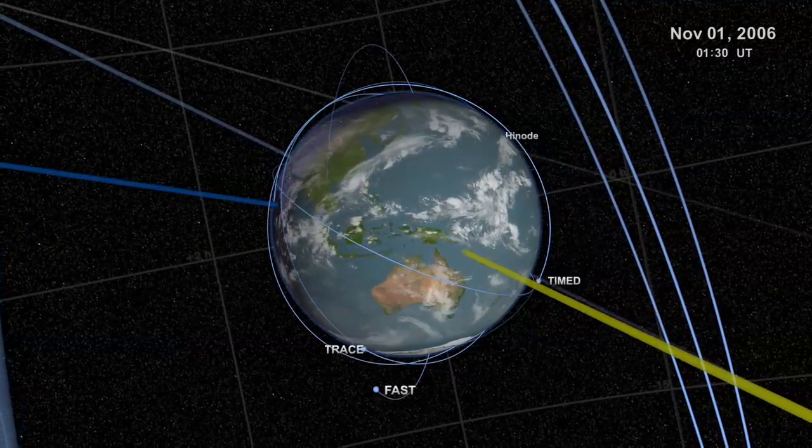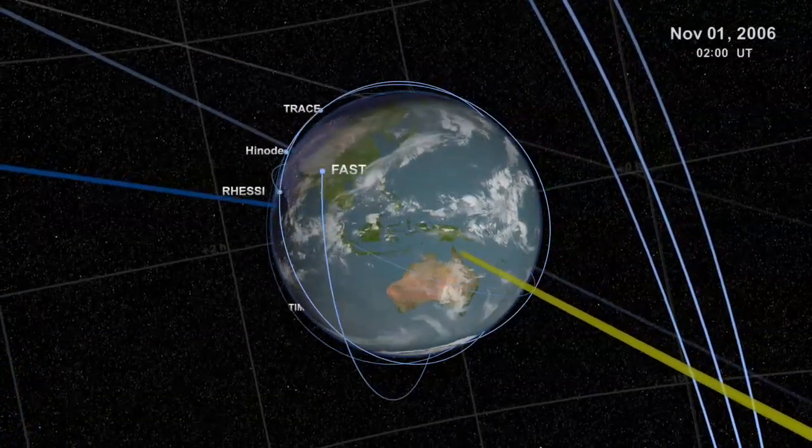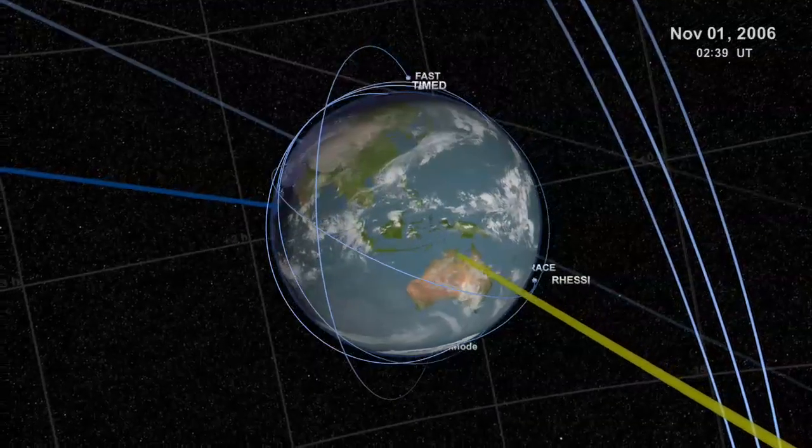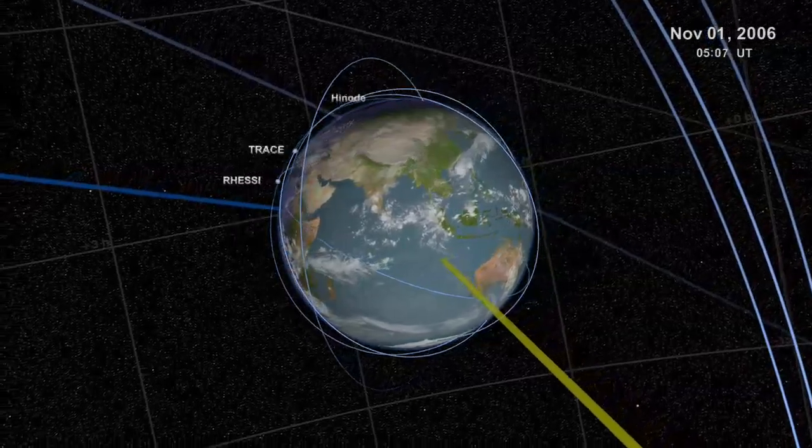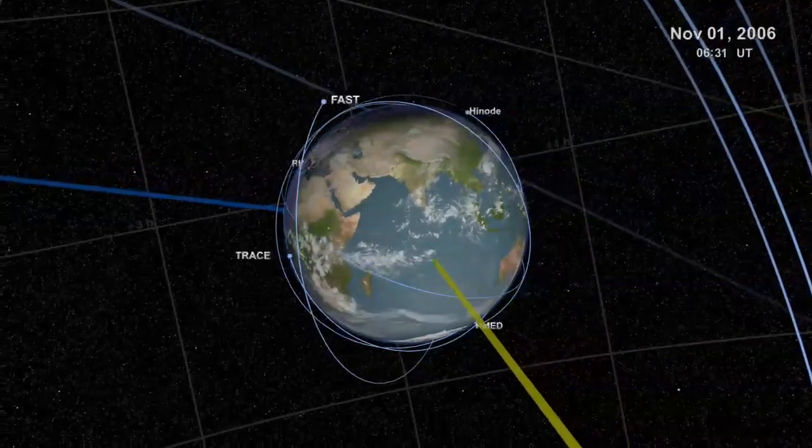These near-Earth satellites monitor solar activity, interactions with our planet's atmosphere, and other aspects of the Sun's condition. You'll notice how they orbit the Earth quickly, about once every 90 minutes or so.